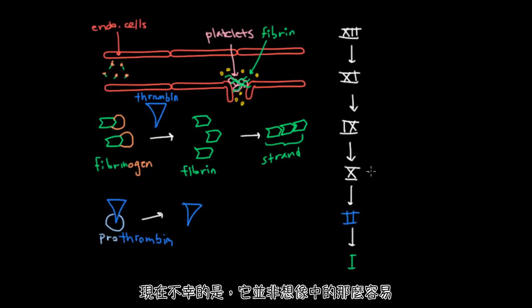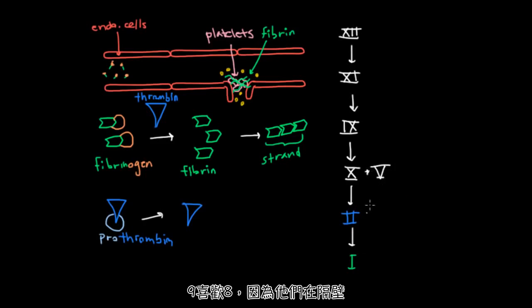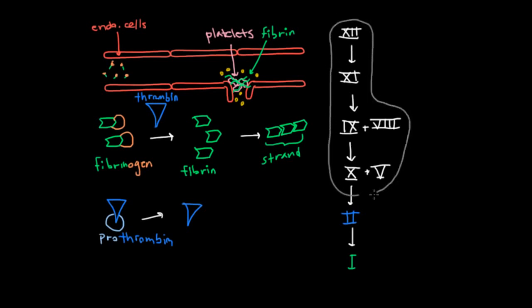Now, unfortunately, it's not quite that easy. 10 likes 5, because they're both multiples of 5, so they work together. And 9 likes 8, because they're right next to each other, and so they work together. So this is the first part of our clotting cascade, and it turns out that we call this part here the intrinsic pathway. And we can talk about what that means later, but for now let's just give it its name.